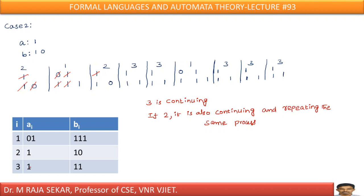Let me consider domino number 3, with numerator 1 and denominator 11. The 1 cancels with the first 1. Now in the denominator I have 1, 0, and double 1. I still need a domino whose numerator starts with 1. Taking domino 3 again — 1 and 11 — another 1 cancels. Now I have 0 and double 1 remaining.